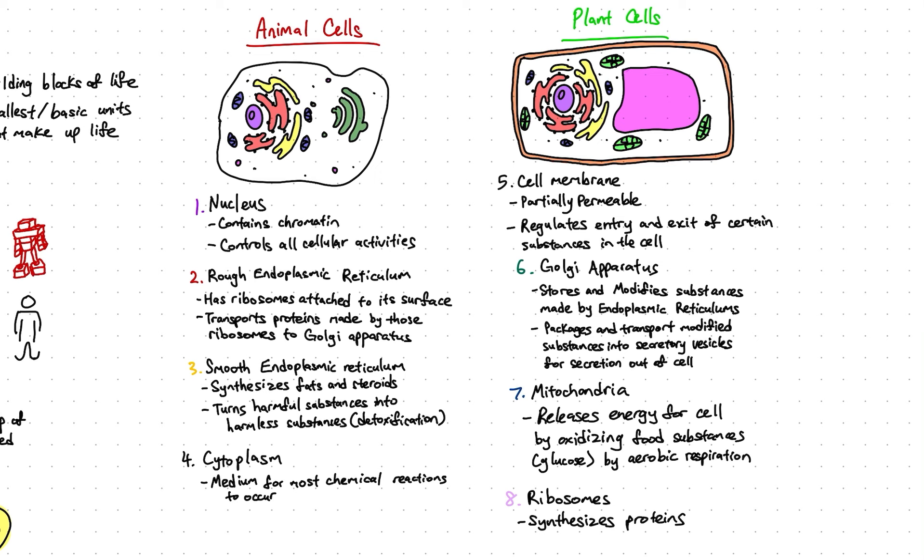Then there's the rough endoplasmic reticulum, which appears rough due to the ribosomes attached to its surface. It transports those proteins made by the ribosomes on its surface to the Golgi apparatus for secretion out of the cell.